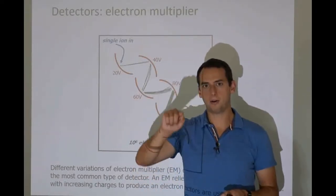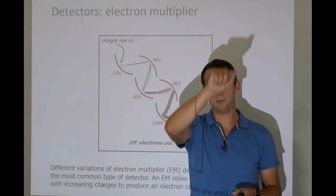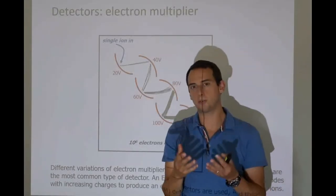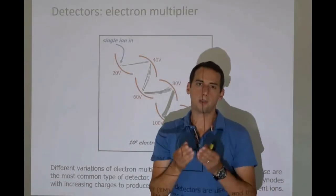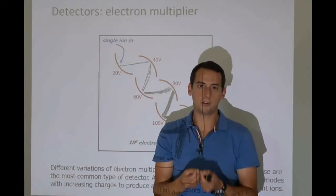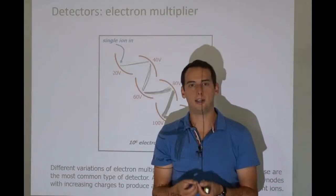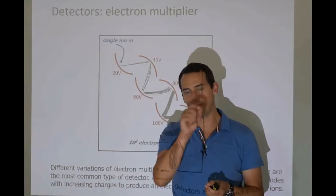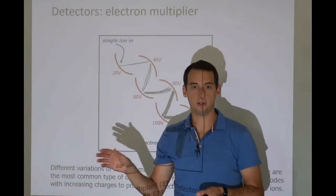We talked about how over time you see current coming through and that's how a detector works. The problem is our detectors by themselves are not sensitive enough. We need amplification. We need to take this very weak signal coming from these very few ions in our mass spectrometer.